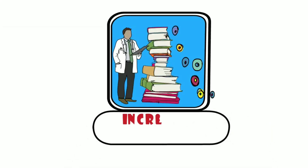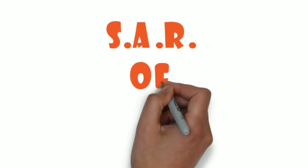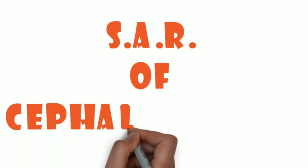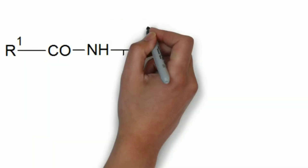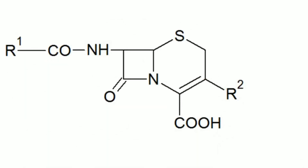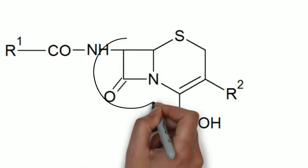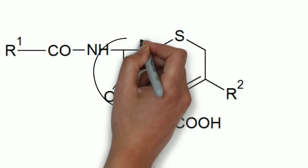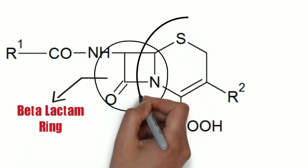Hello and welcome back to the new video of Incredible Medo Concepts. Today we're going to learn about the SAR of cephalosporins. Cephalosporins are the beta-lactam antibiotics which are composed of two rings. The first one is the beta-lactam ring and the second one is the dihydrothiazine ring.